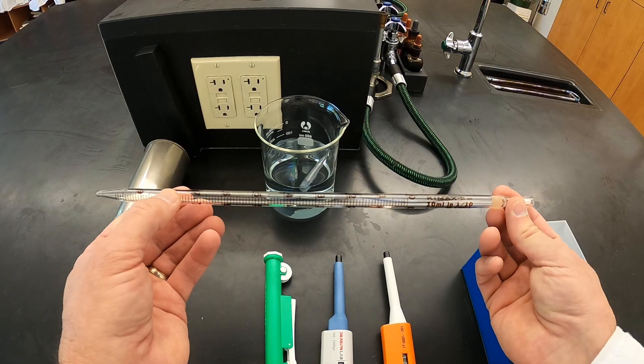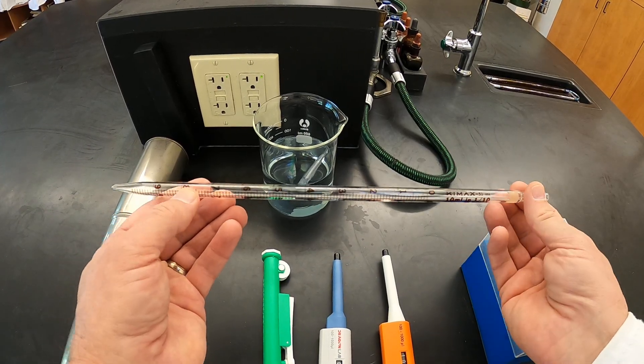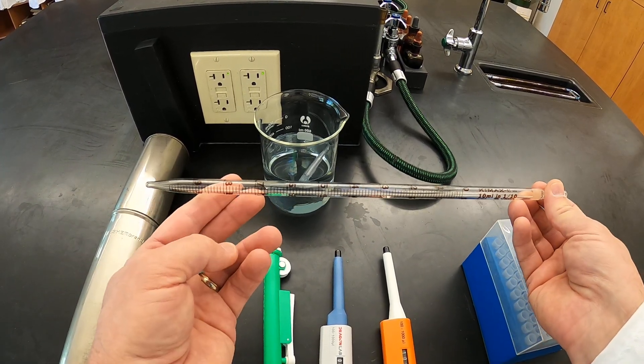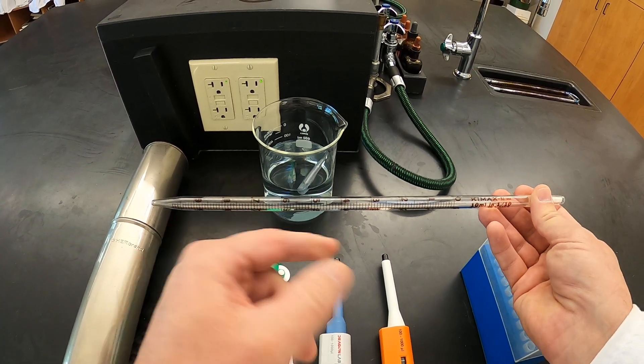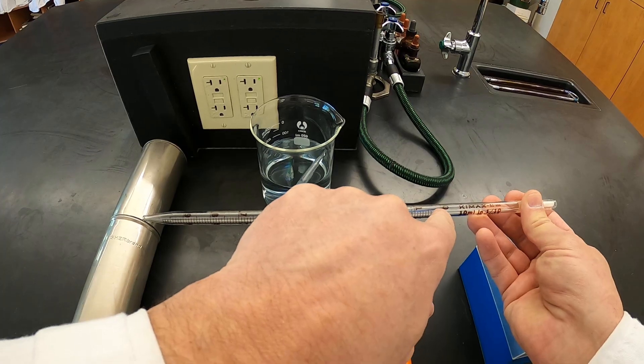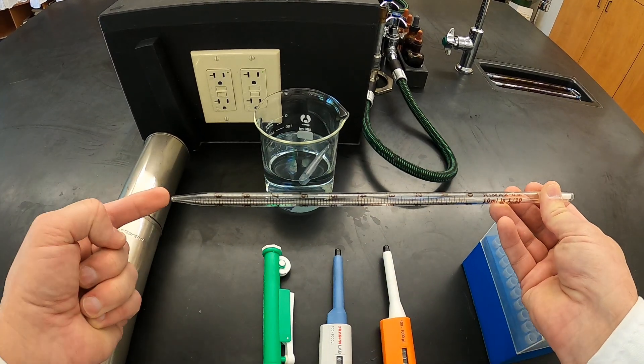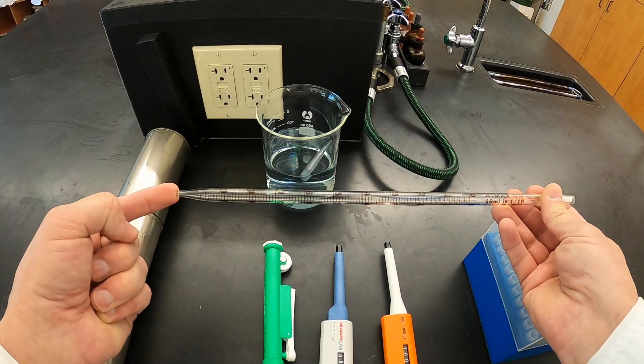This again is because of the etched band, and we look at the markings on here we can see this is a serological or a blowout pipette, and the increments here go from zero milliliters all the way to 10 milliliters at the very end.